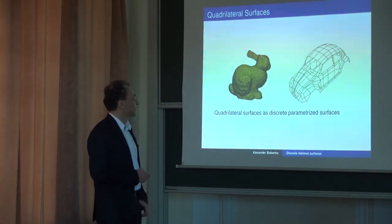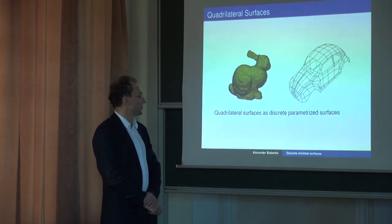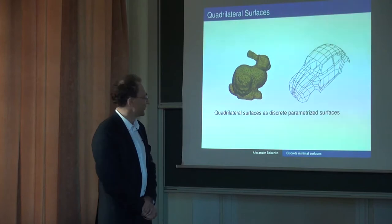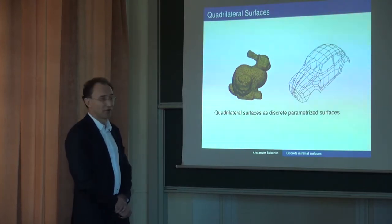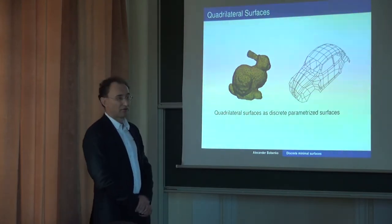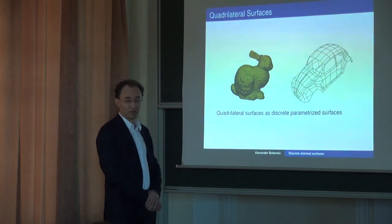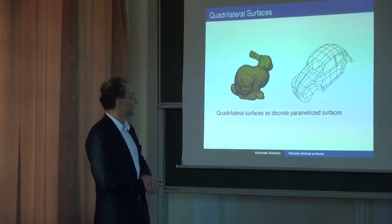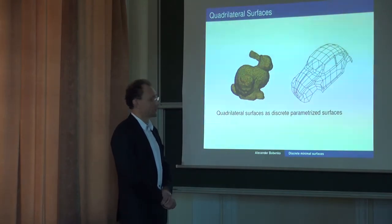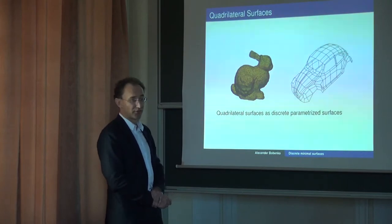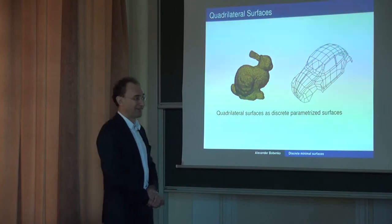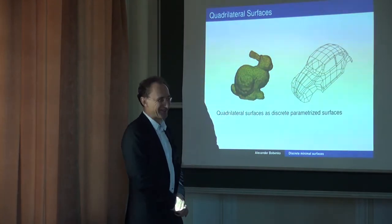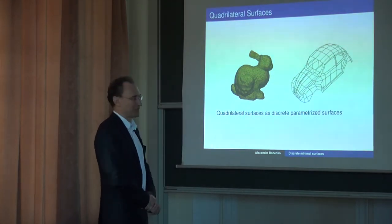My talk will be about discretization, and that's what we are doing in Berlin — what is now developing between mathematics and computer science. Here you see two images, both from computer science. The left image is a triangulated surface, which should be considered as an analog of a smooth non-parameterized surface. The right image has lines on it and is built out of quadrilaterals — a discrete analog of parameterized surfaces in differential geometry.